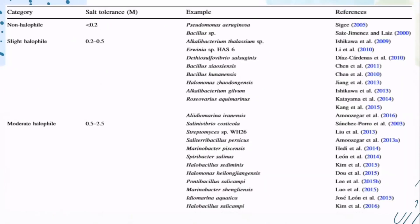This classification is proposed by Kushner and Kamikura. Non-halophiles can tolerate less than 0.2 moles of salt; example organisms include Pseudomonas aeruginosa and Bacillus species. Slight halophiles tolerate 0.2 to 0.5 moles of salt, with corresponding example organisms listed. Moderate halophiles tolerate 0.5 to 2.5 moles of salt, with their example organisms shown.